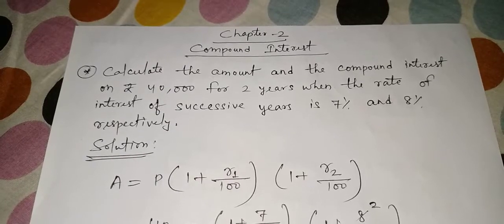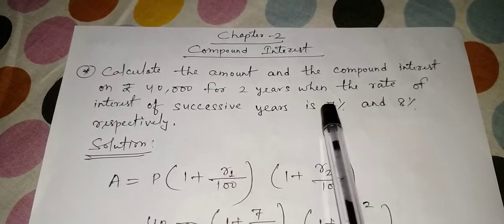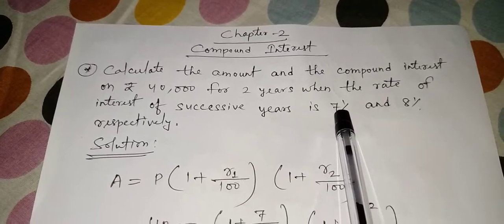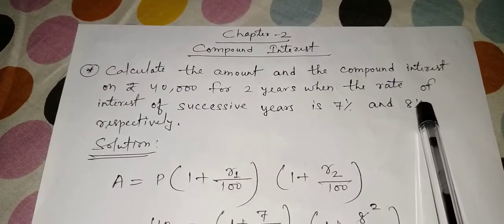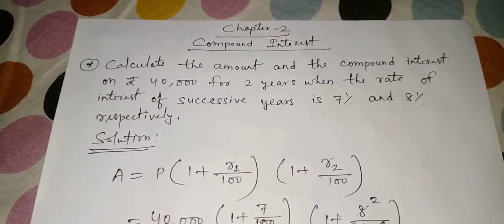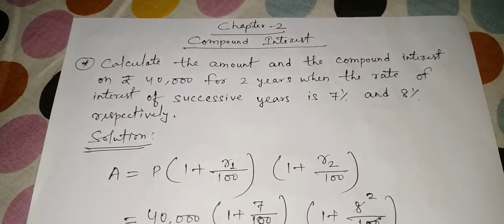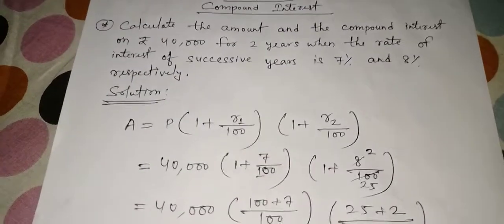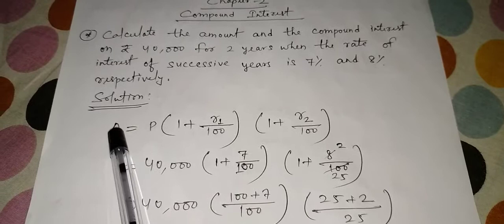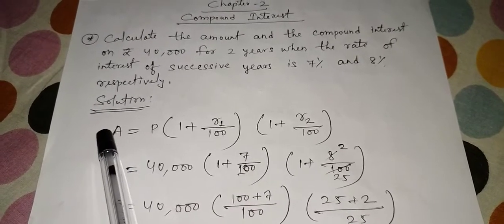That means here we have two rates: for the first year rate is 7% and for the second year rate is 8%. Because the time is of two years, so here two rates. In such case, what we have to do? You just see the formula changes.